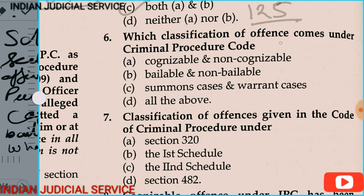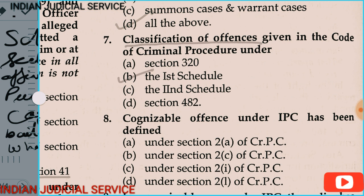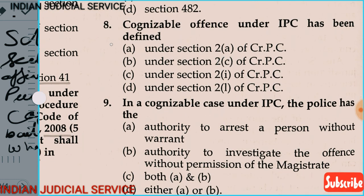Question 6: Which classification of offence comes under the Code of Criminal Procedure? The options are: cognizable or non-cognizable; bailable or non-bailable; summons case or warrant case. Option D is correct — all of the above. The classification of offence is given in the Code of Criminal Procedure under Section 320, Schedule 1, Schedule 2, and Section 482. Schedule 1 provides that offences are classified as cognizable, non-cognizable, bailable, and non-bailable.